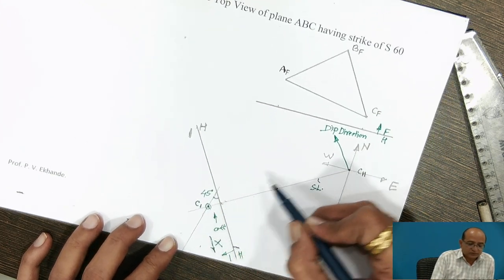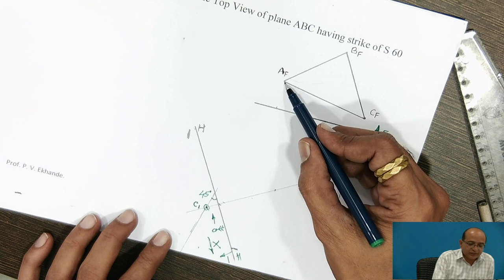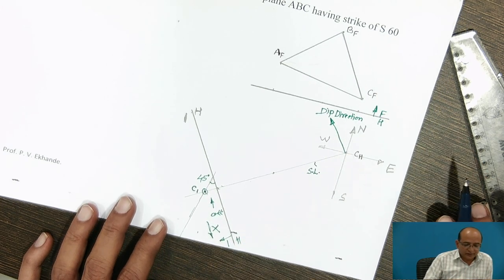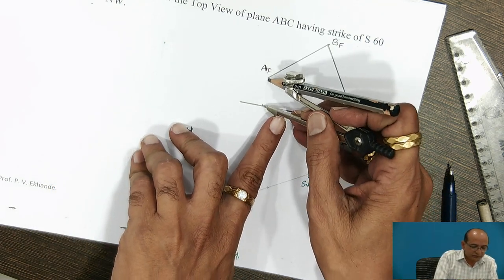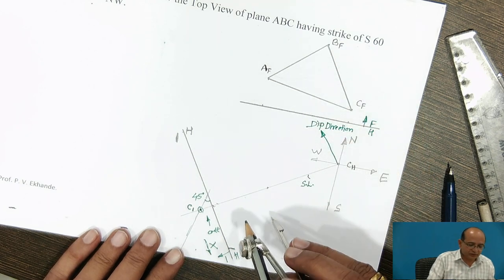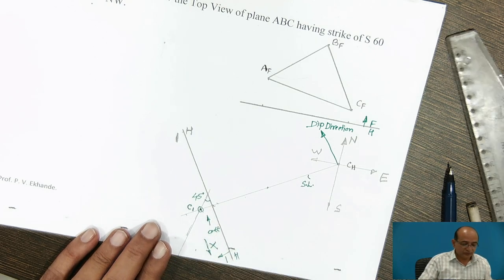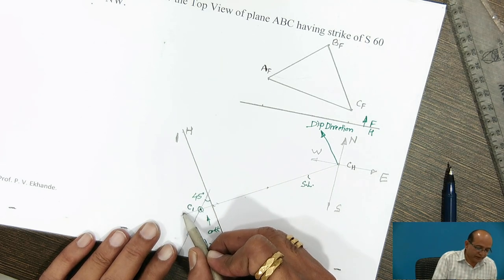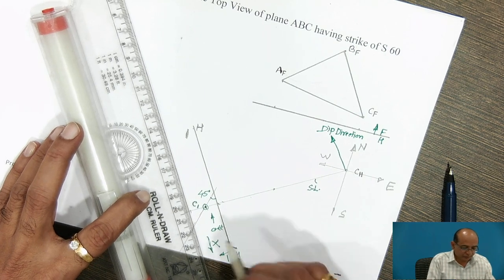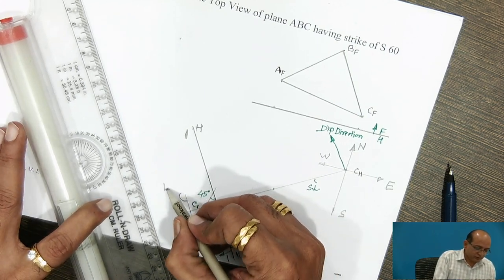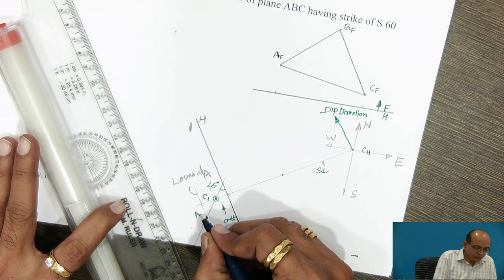On this edge view, we now mark the positions of A and B — C is already known. For point A, we take its position from the front view and mark it on the vertical projector line. Drawing a parallel line from that point gives the locus of A, and its intersection with the edge view line gives the position A1.